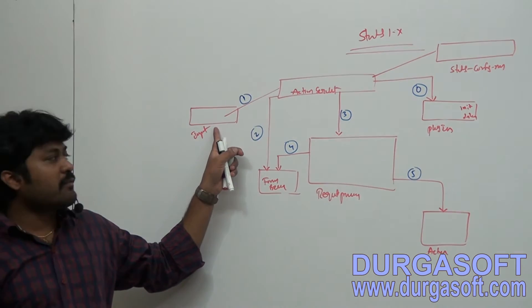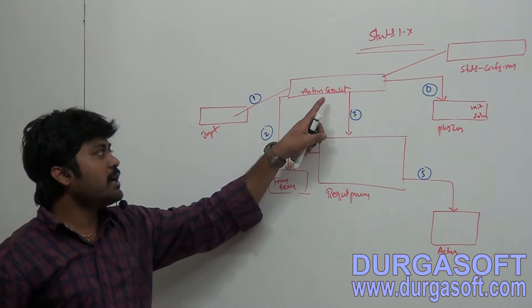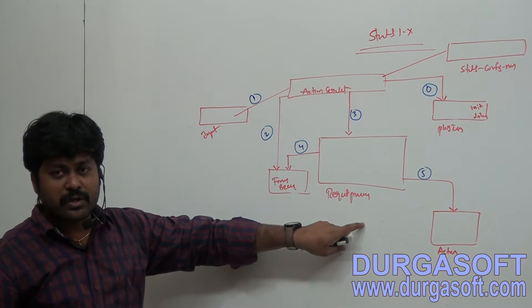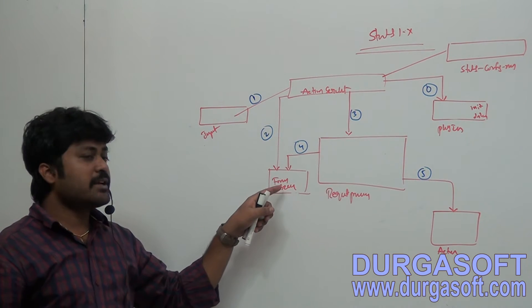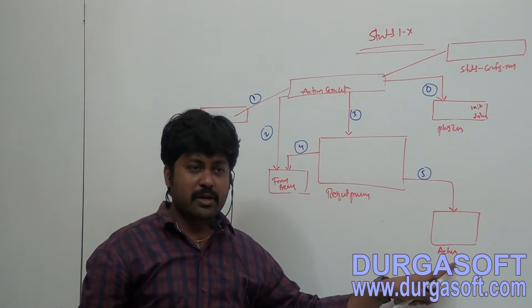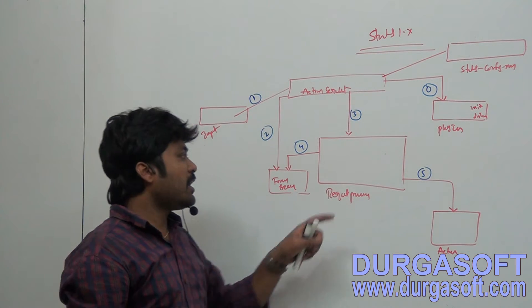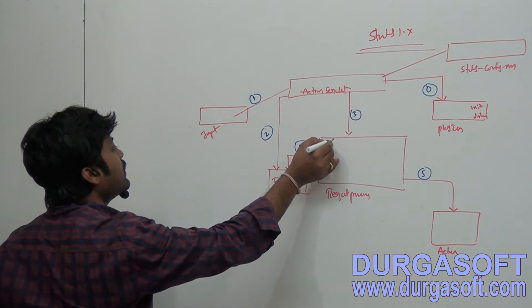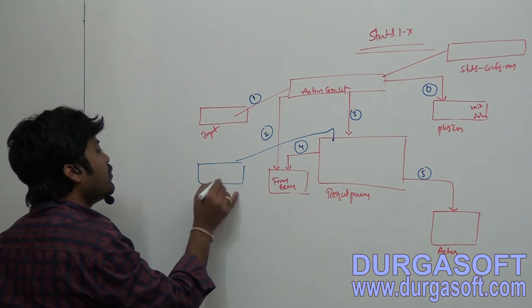After creating the form bean object, the request is forwarded to RequestProcessor. RequestProcessor will execute the required validation and controller operations. Finally, RequestProcessor itself will forward the output page as the response.